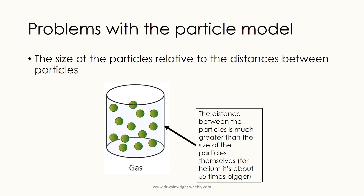For example, take helium. The distance between any two helium atoms is about 55 times bigger than the actual size of a helium atom. You can see why we don't draw this accurately on diagrams — you'd need a massive space just to show two atoms, or you'd have to draw the atoms very small to accurately represent the distance between them. This is why people develop misconceptions about the particle model.